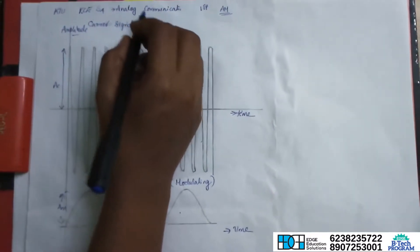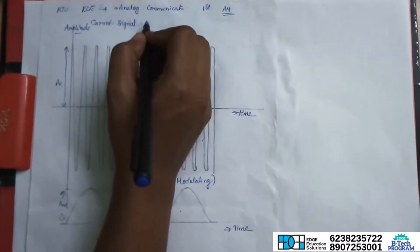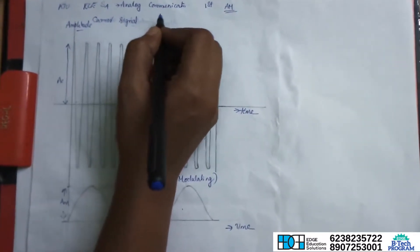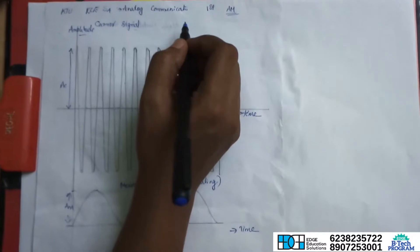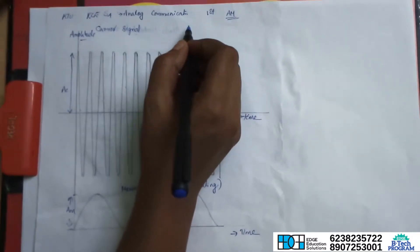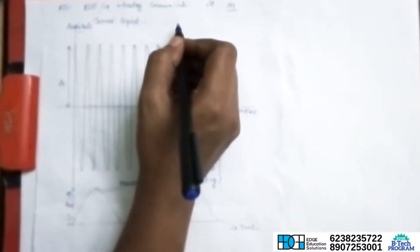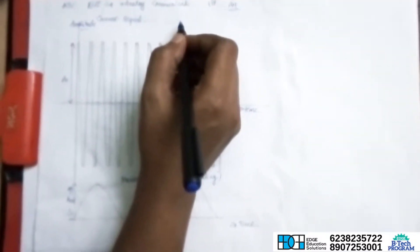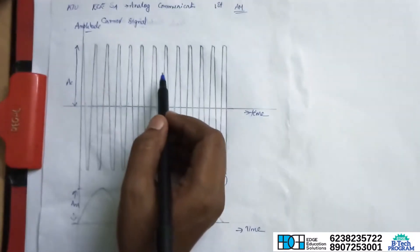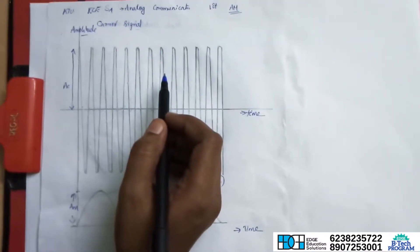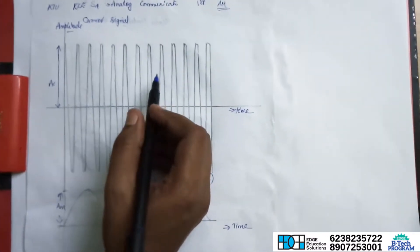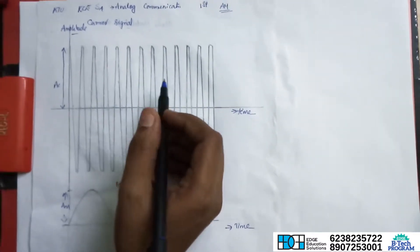S4 EC is a communication subject. In the first module, Amplitude Modulation is a topic. Amplitude Modulation is mainly used in radio communications.